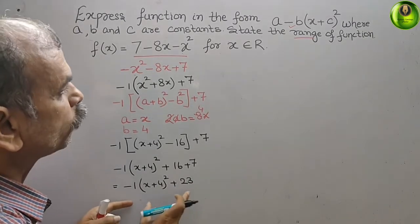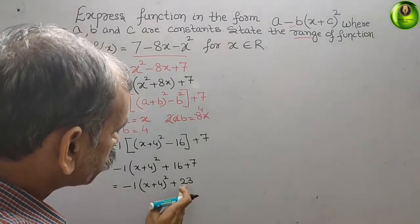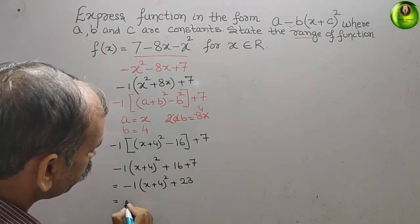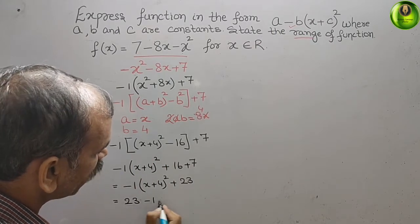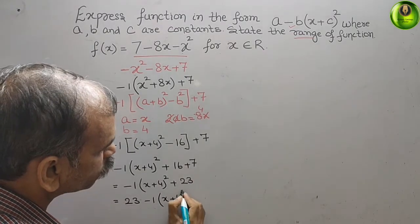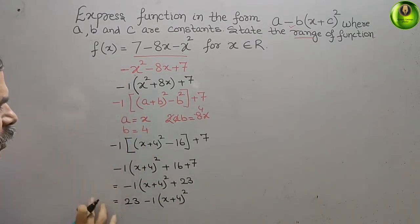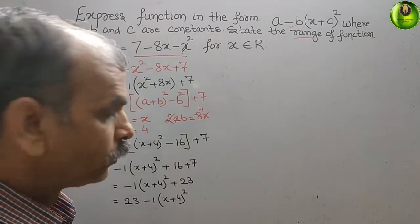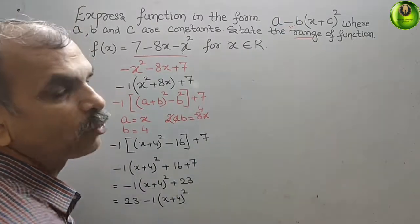Therefore the value is minus 1 (x plus 4) whole square plus 23. Arranging in the required form with 23 first, it becomes f(x) = 23 minus 1(x plus 4) whole square. We have now converted the function into the required form. Next we find the range.